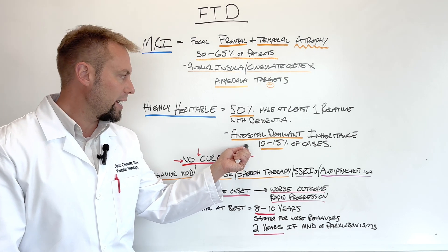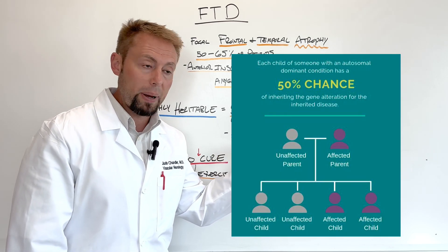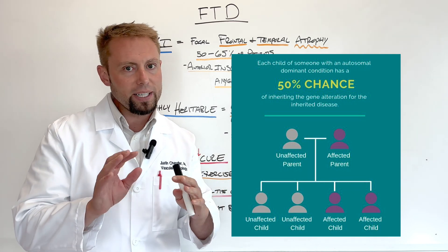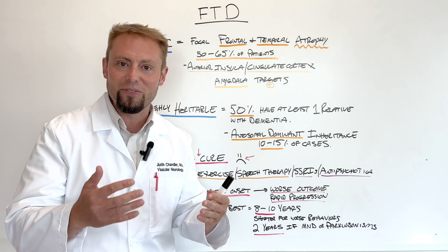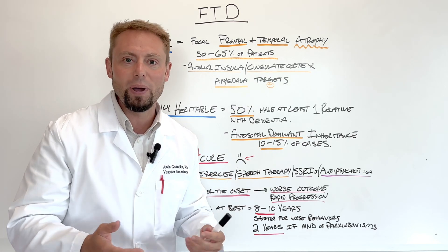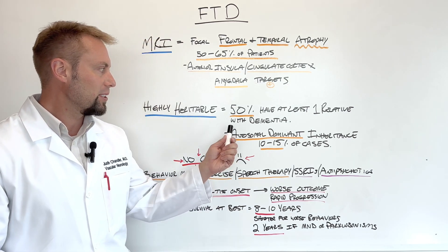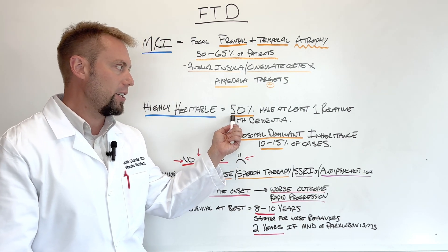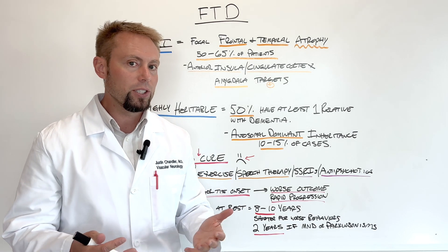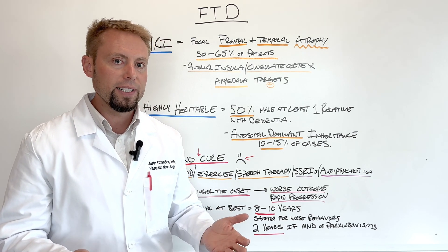We're not going to get into Mendelian genetics and how we formulate and figure out those patterns in this video. But suffice it to say that 50% of individuals that have frontal temporal dementia have at least one other relative that has dementia.